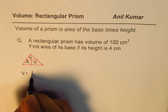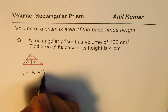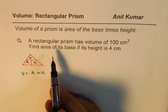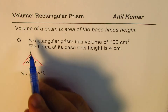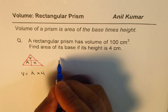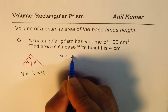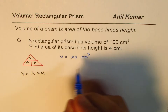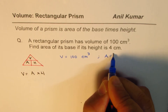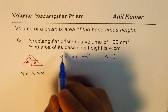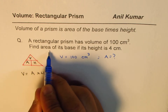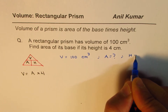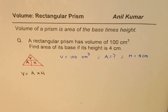From this triangle, volume is area times height — that is how you can read it. Now let's look at the question. A rectangular prism has a volume of 100 centimeters cubed. We need to find the area of its base if its height is 4 centimeters. So volume is 100 cm³, height is 4 cm, and we need to find the area.